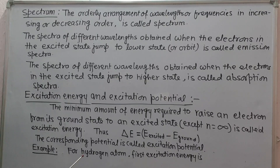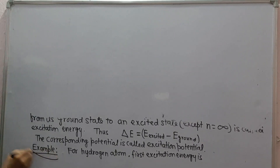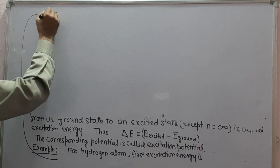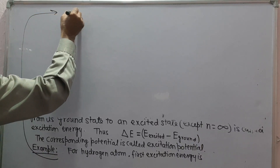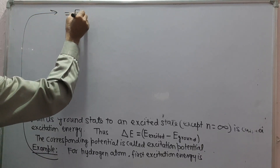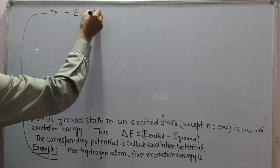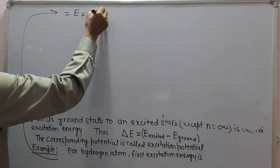For example, for the hydrogen atom, the first excitation energy is equal to E2 − E1.